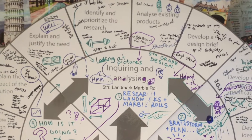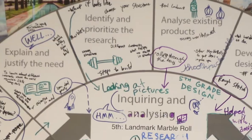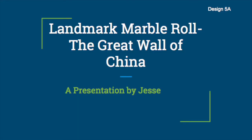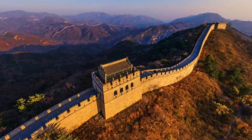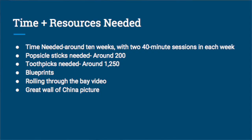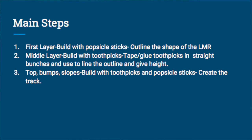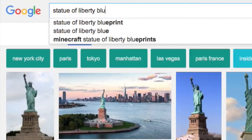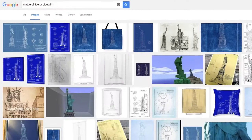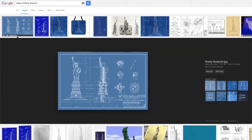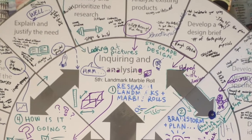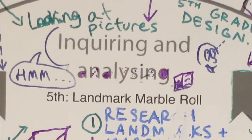I connected to the design cycle, which is identify and prioritize the research. I identified what I needed to research about the Great Wall of China — what it looks like and what steps to build it. I found a blueprint on Google to show how I am making my toothpick structure, and I thought that connected to inquiring and analyzing.